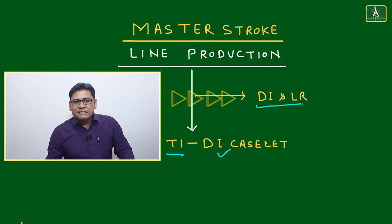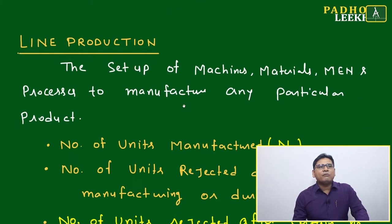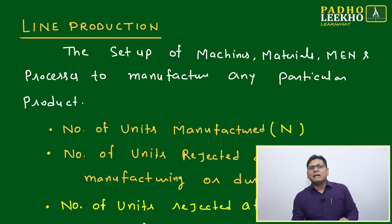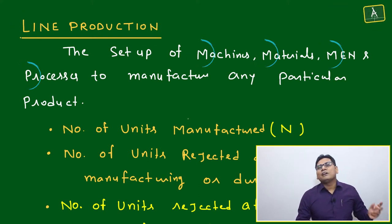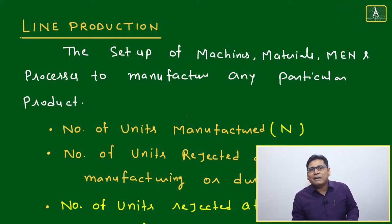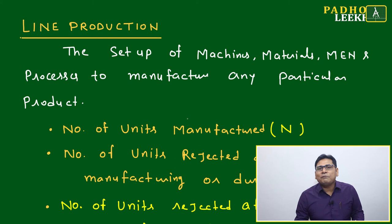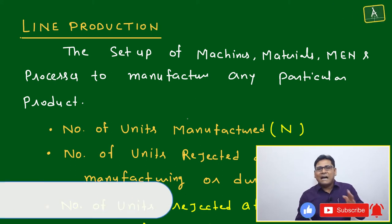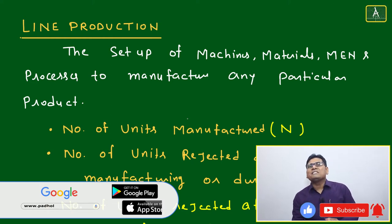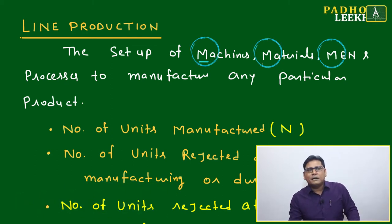This topic affects your DI and LR section under Type 1 DI caselets based on tables and graphs. Line production mainly depends on four pillars: Man, Machine, Material, and Processes — commonly called 3M plus Process. Everyone from a mechanical engineering background knows this well, but it is also understandable for non-engineers as these are the basic pillars of any manufacturing or fabrication setup.